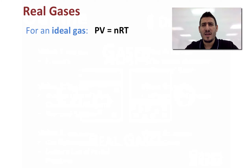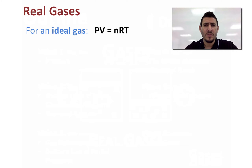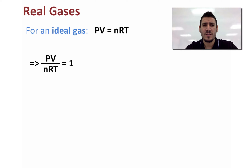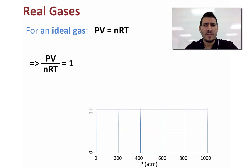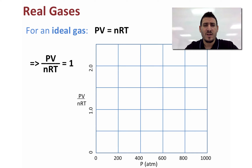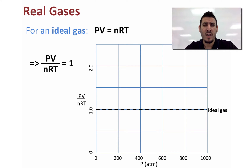For an ideal gas we have said that PV is equal to nRT, and therefore if we rearrange this expression we get that PV over nRT should be equal to 1. Now if we plot this on a curve of PV over nRT versus pressure, the curve will be a horizontal straight line pointing to the value of 1 on the PV over nRT axis.